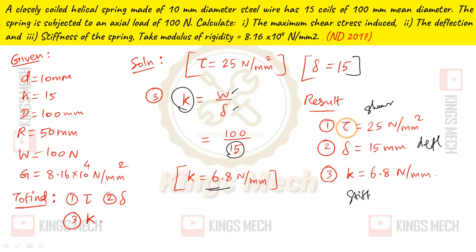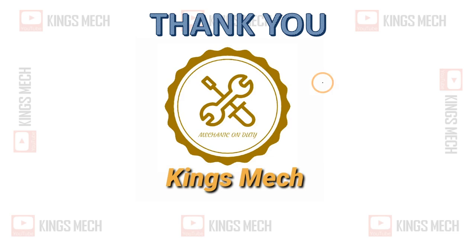The units are: shear stress tau in newton per mm², deflection delta in mm, and stiffness K in newton per mm. That's it — the unit is the luckiest part.